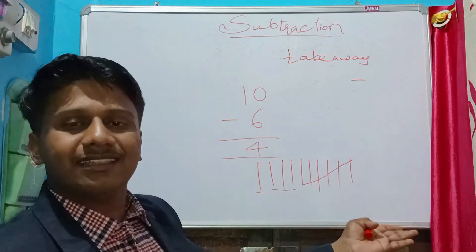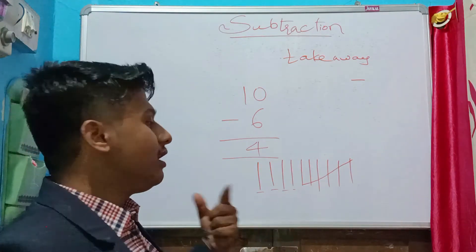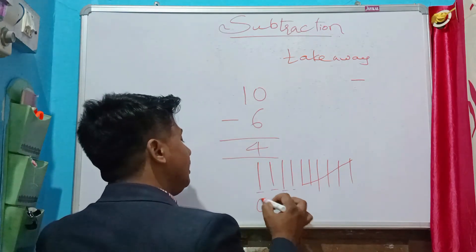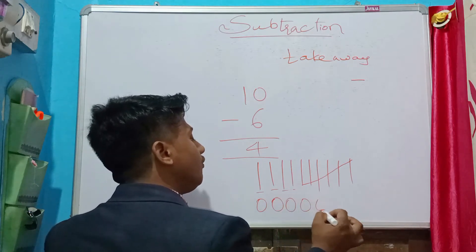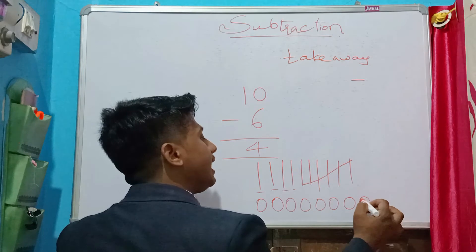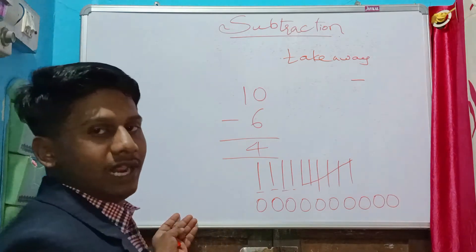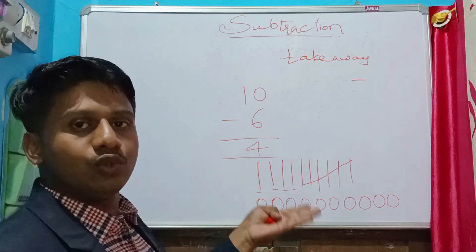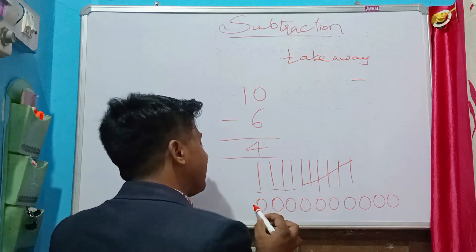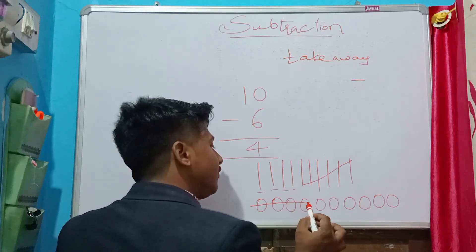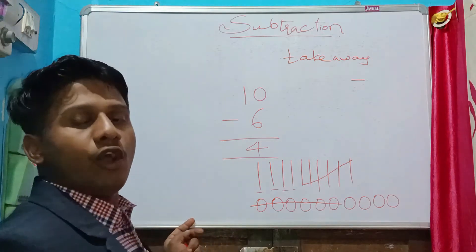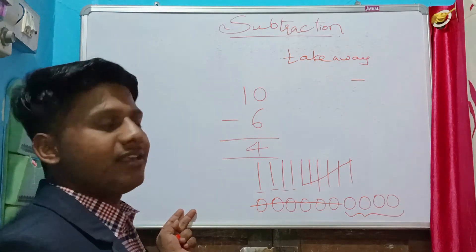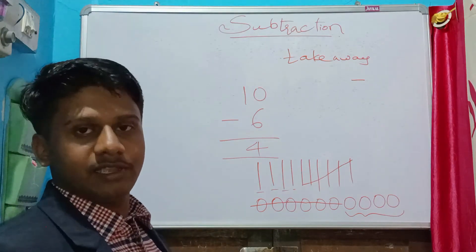You can use lines, circles, or anything. For example, consider X marks. You have ten X marks: one, two, three, four, five, six, seven, eight, nine, ten. Out of ten, assume you used six X marks — so let's remove six: one, two, three, four, five, six. Six removed, so how many X marks do you have left? Four. That is how we do subtraction.